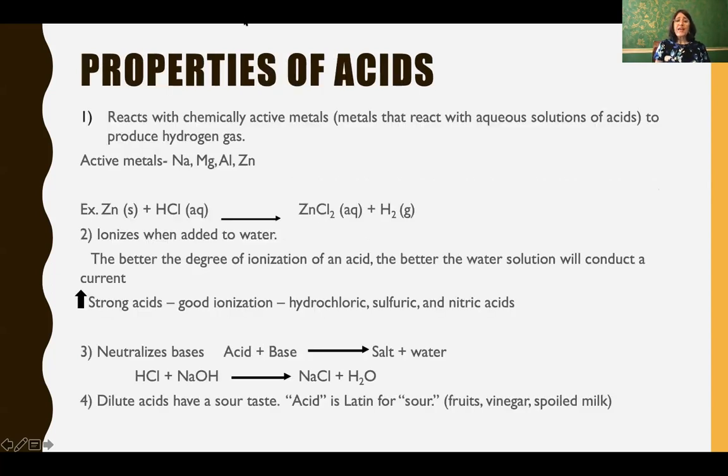The properties of the acids: it reacts with active metals and produces hydrogen gases. So when we look at this reaction, remember class, we learned about single displacement. So the positively charged, the cation, the zinc is going to replace the positively charged hydrogen to form zinc chloride. And remember that hydrogen gets kicked out and it's diatomic. So it's H2. So there's your hydrogen gas.